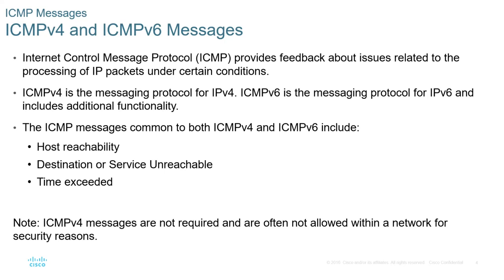Internet Control Messaging Protocol, ICMP, provides feedback about issues related to the processing of an IP packet under certain conditions. ICMP Version 4 is the messaging protocol for IPv4. ICMP Version 6 is the messaging protocol for IPv6 and includes additional functionality. The ICMP messages common to both ICMPv4 and ICMPv6 include host reachability, destination or service unreachable, and time exceeded.